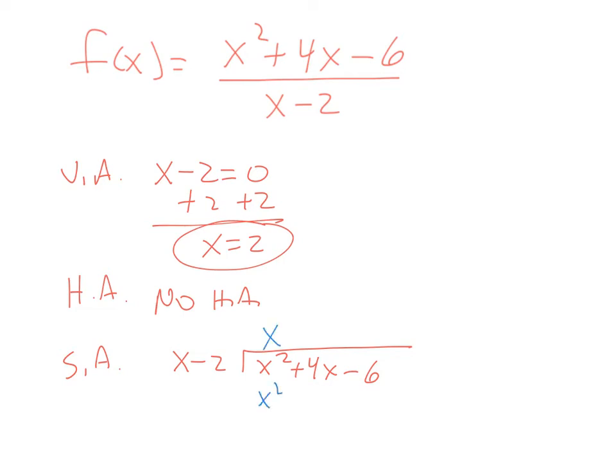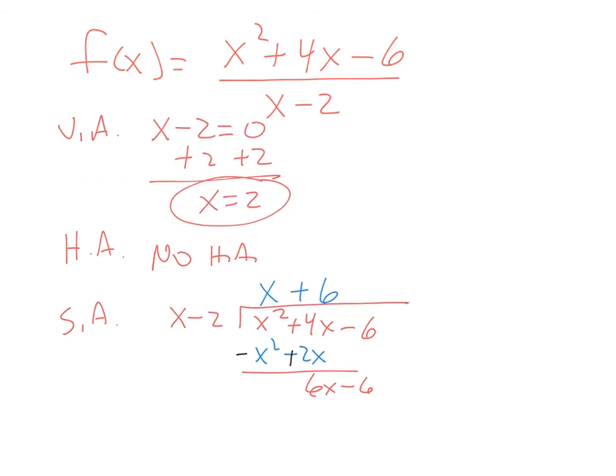x times a negative 2 is a negative 2x. Change the signs. And add down, and we get 6x minus 6. What times x gives you 6x? A positive 6. Positive 6 times x is 6x. Positive 6 times a negative 2 is negative 12. Change the signs and add down. Get a remainder of 6. We don't care about the remainder. There is a slant asymptote at the equation y equals x plus 6.